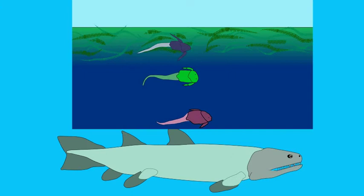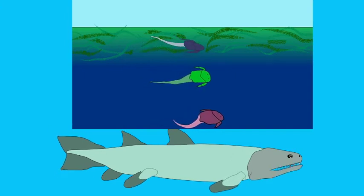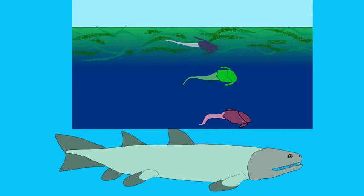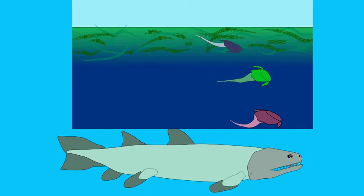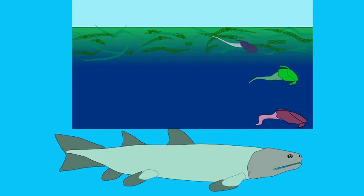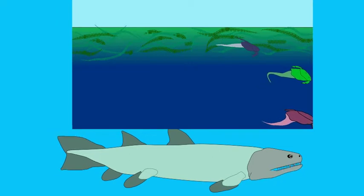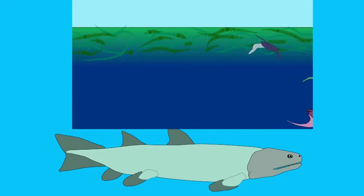The earliest members possess unjointed pectoral fins. Later members possess pectoral fins with joints and then still later members such as Bothriolepis possess elongated pectoral fins with joints. This suggests that they were adapting to move in shallow water or on land for at least brief periods.